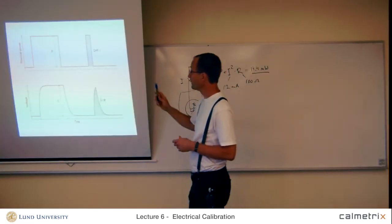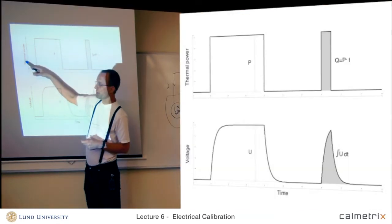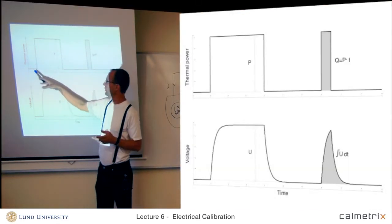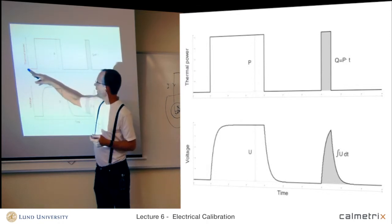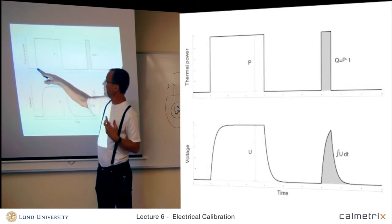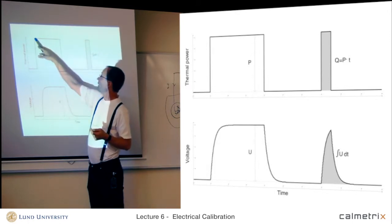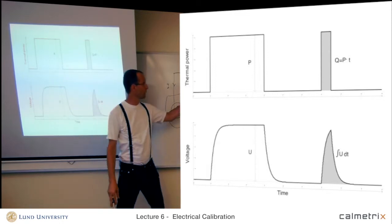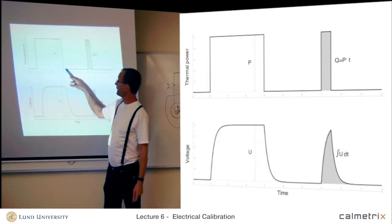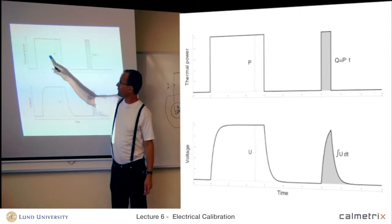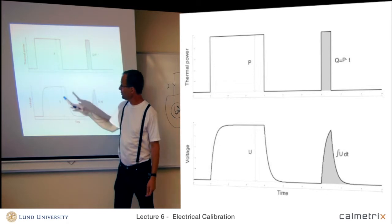And if you look here, we can see the result of this. This is the thermal power input from the electric calibration. And here we have a baseline. Here we turn the heater on, turn the voltage on. And here we have a constant, in this case, 14.4 milliwatt. And here we turn it off and go back again. So, we have a certain thermal power being produced.